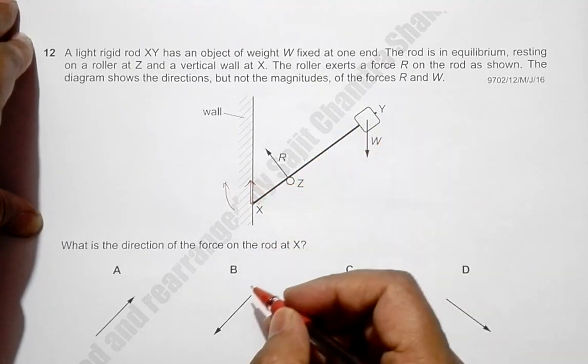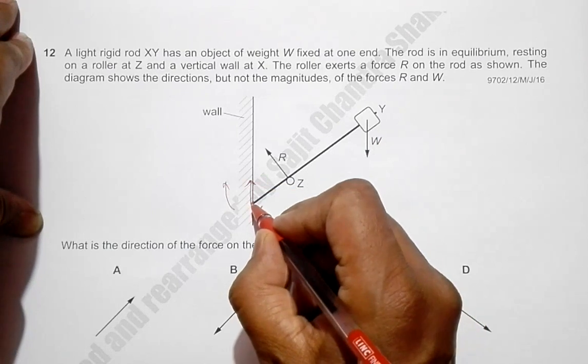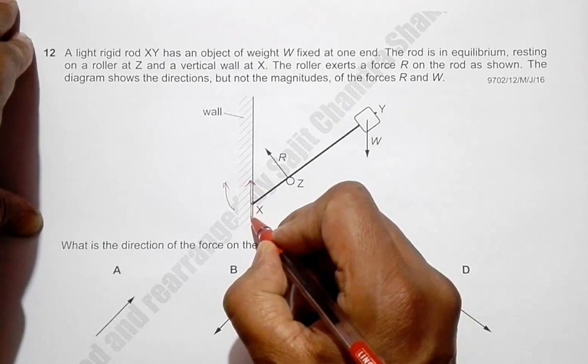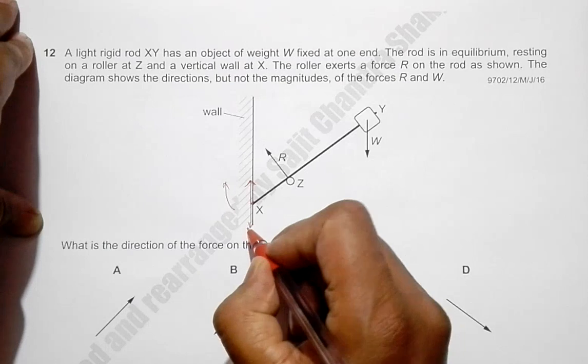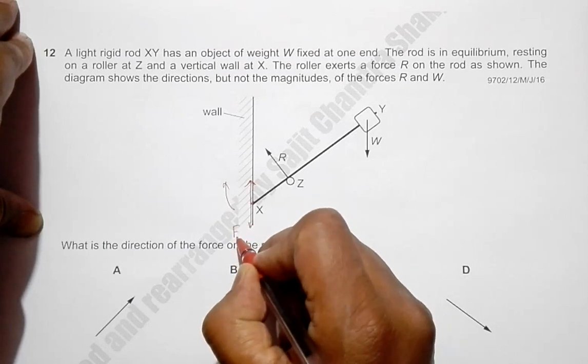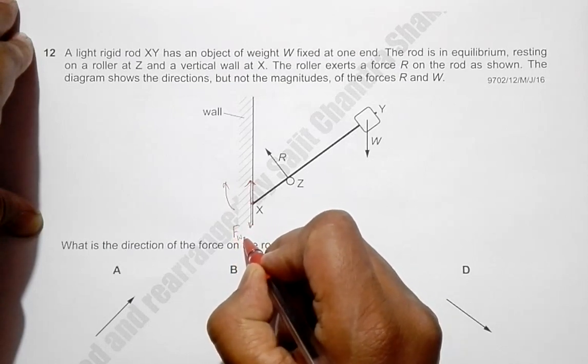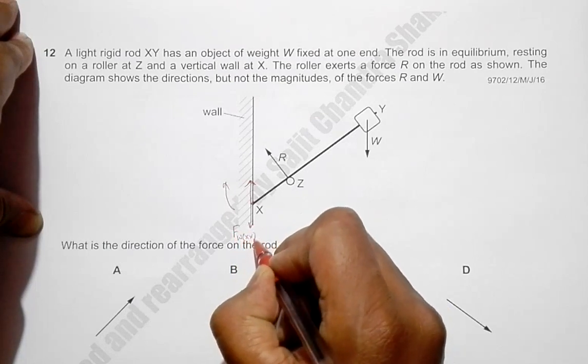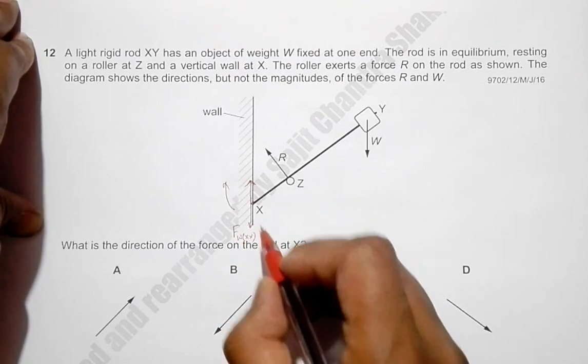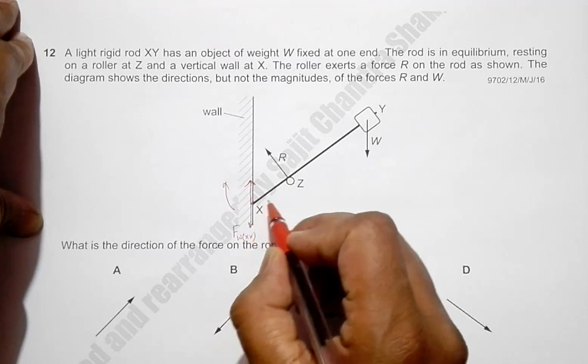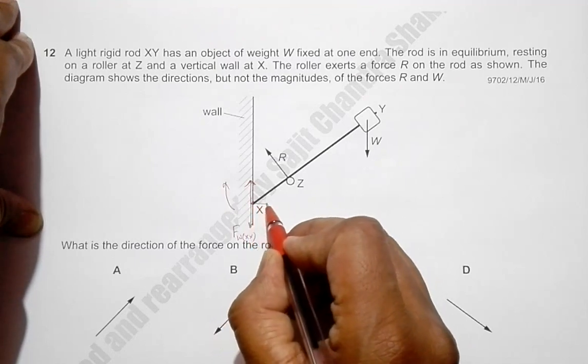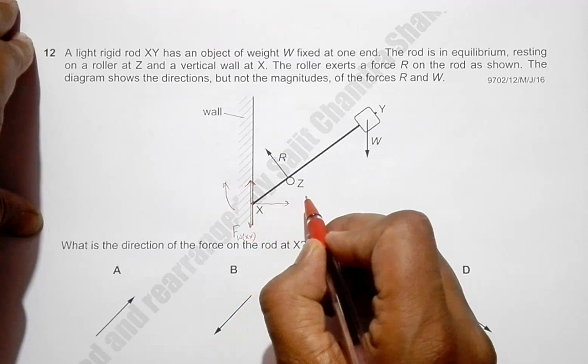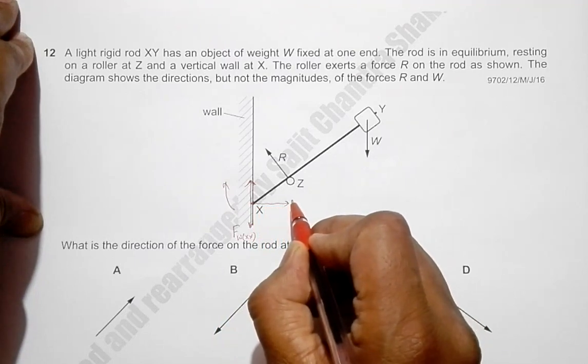So this makes the wall also apply an opposing force. So this is the force applied by the wall on the rod XY. Another force that the wall exerts on this rod at this point is the normal reaction force. So this is the normal reaction force.